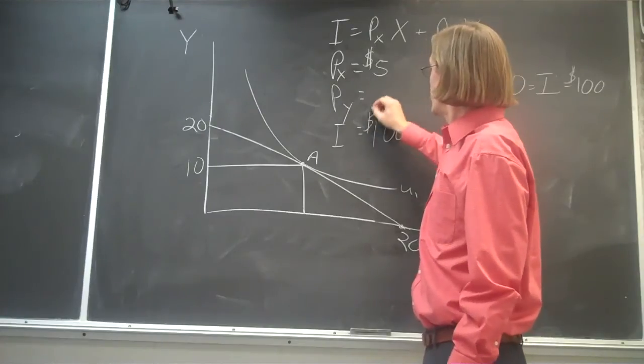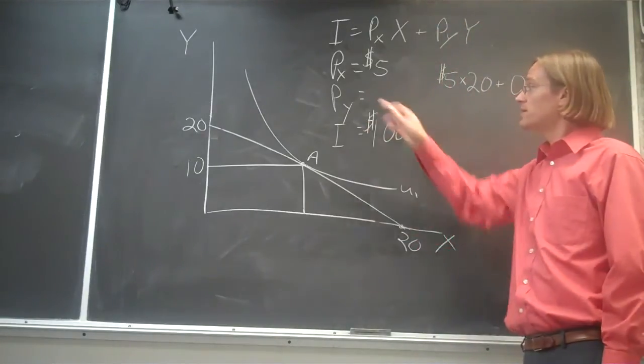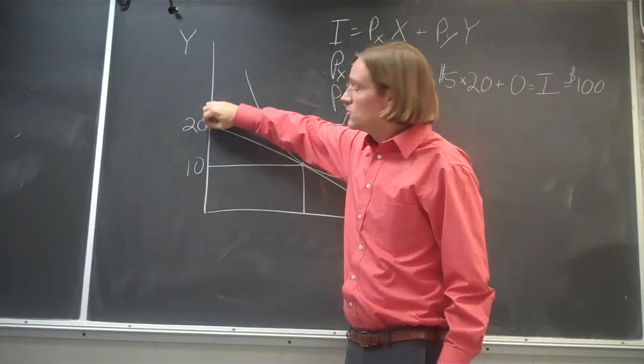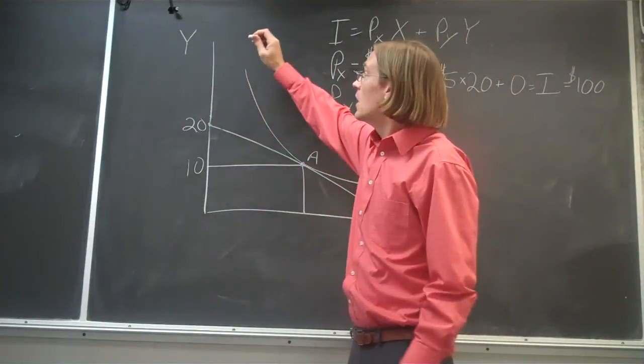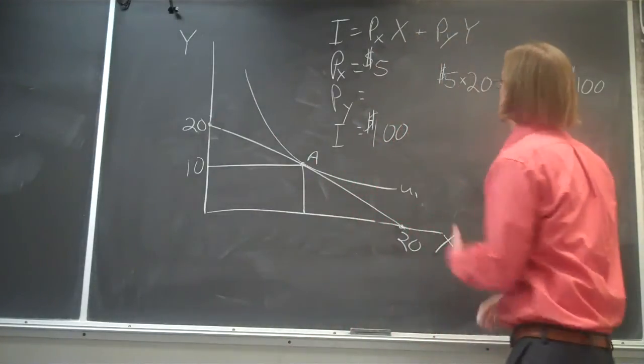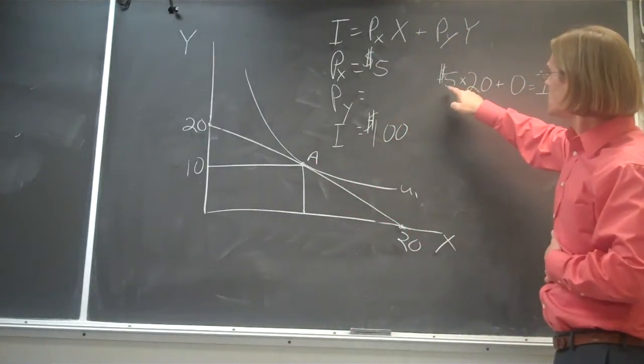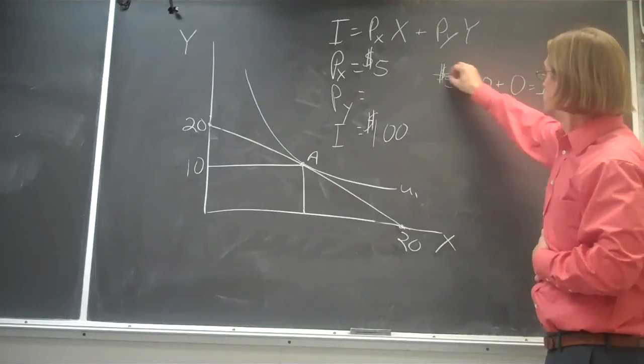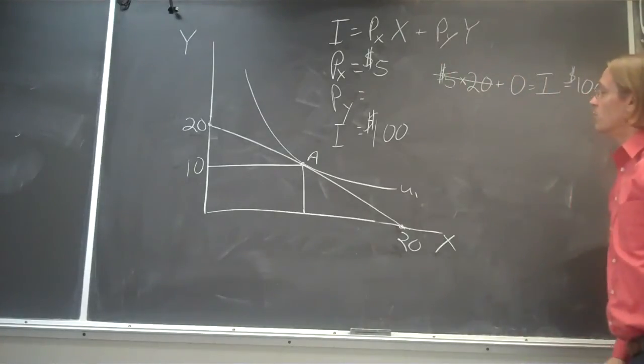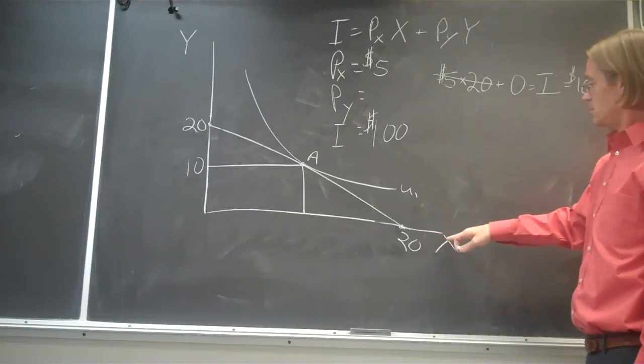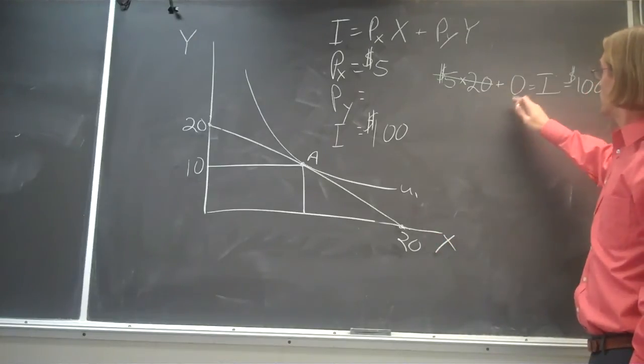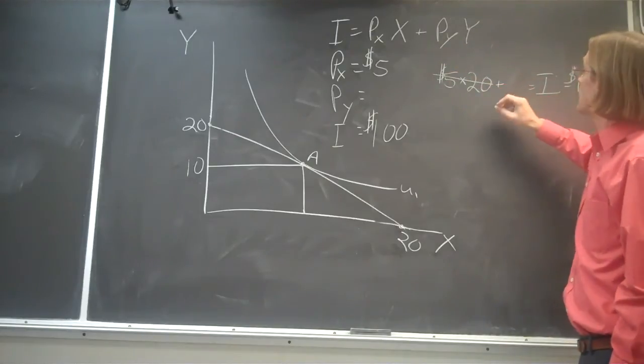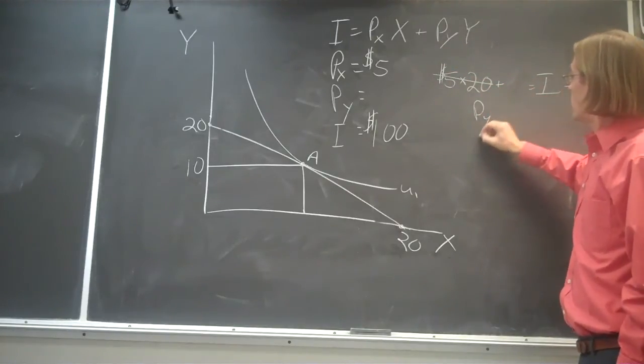So now we can go back and figure out the price of Y if we go to the other end of this budget constraint and say, let's assume now we're spending all of our money on good Y. Well, if that's the case, then we're not going to be buying any of good X, so this is going to go away. We know that the number of X goes to zero. We don't have to worry about that. But now we have to deal with Y. And so we don't know what the price of Y is.